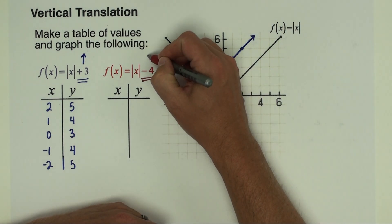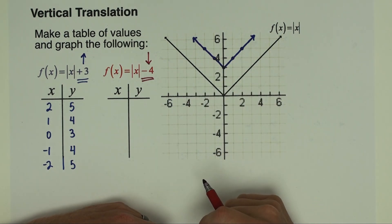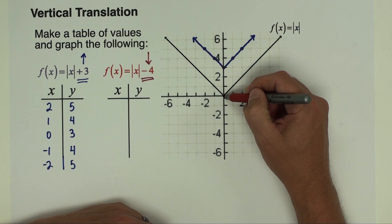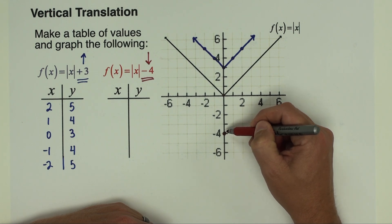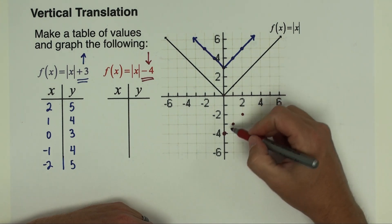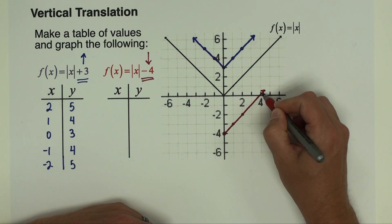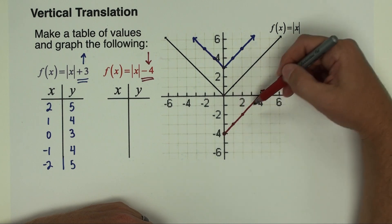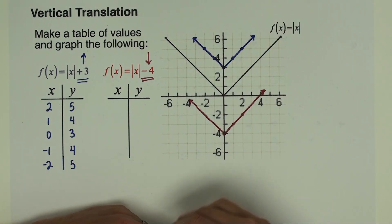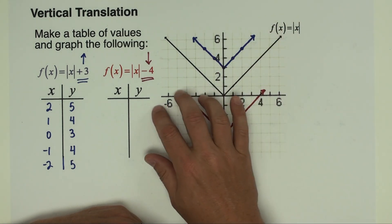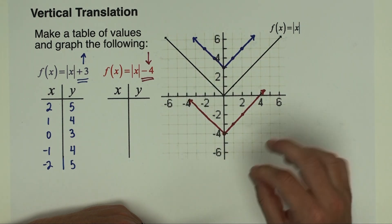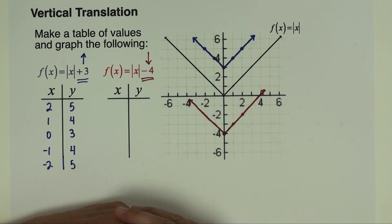If you subtract a number outside the absolute value, it moves the graph down that many units. For |x| − 4, I take the (0,0) vertex and move it down four units to (0,-4). Then I take the (1,1) point and move it down four to (1,-3), and the same on the other side. It has the same positive-one and negative-one slopes. Now we can place this absolute value V-shape anywhere on the coordinate plane.